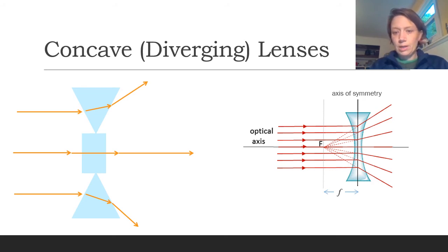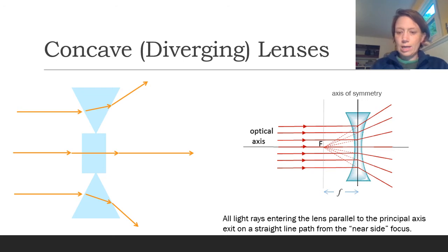You can see that all of the light rays entering the lens parallel to the principal axis exit on a straight line path away from the near side focus. In this case, we're going to be using the focus on the near side of this lens. The light doesn't necessarily go through that focus, but when it hits the axis of symmetry, it bends as if it did come from that focus. That's how the geometry and anatomy of concave lenses looks.